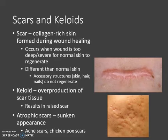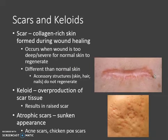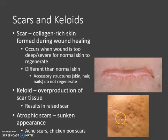For example, in an area where you have a scar, hair and nails don't regenerate, and it looks different than normal epithelium because you're seeing connective tissue instead of epithelial tissue. A keloid is a type of scar in which there's an overproduction of scar tissue, resulting in a raised scar as you can see here. Atrophic scars can also occur, where the skin takes on a sunken appearance — this is especially common with acne scars and chickenpox scars, where areas of the skin are lower in elevation than the surrounding normal skin.